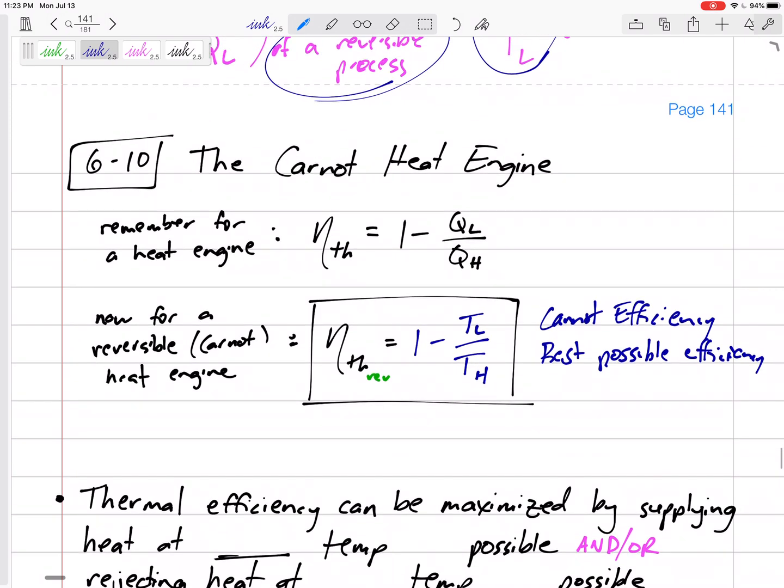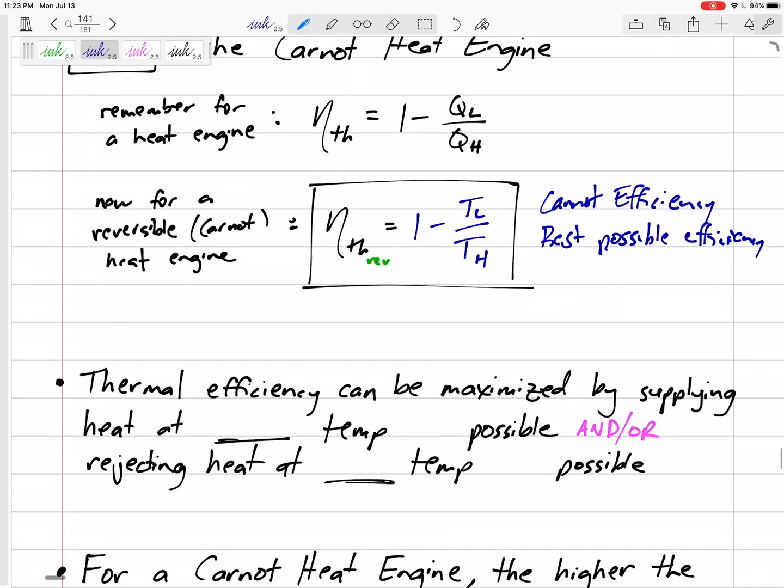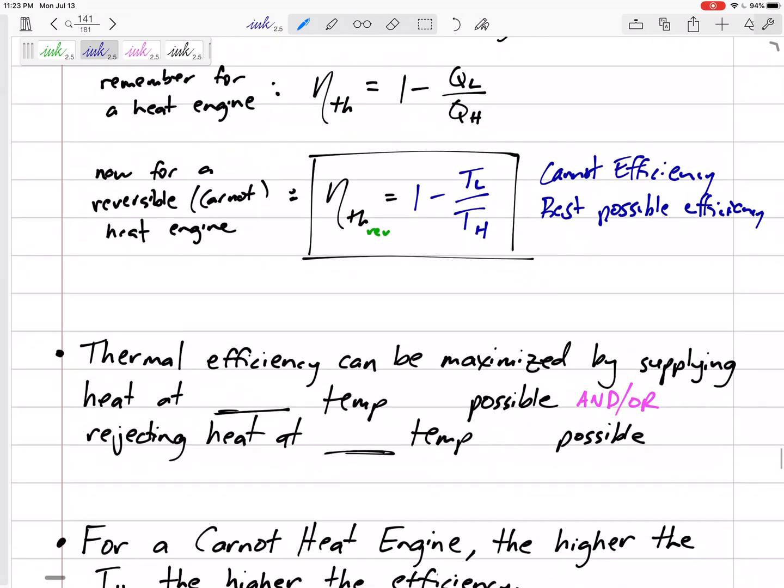This is the Carnot efficiency, the best possible efficiency. If it tells you this is a Carnot heat engine, then we can use that efficiency. If it asks what is the best efficiency we can get, it's this that they're talking about.